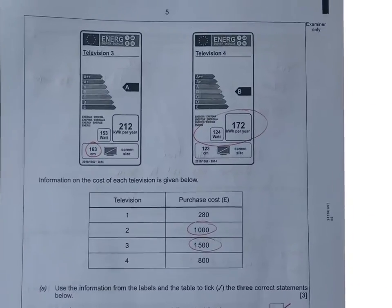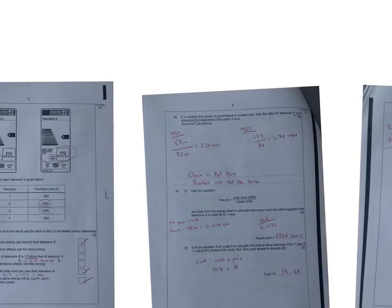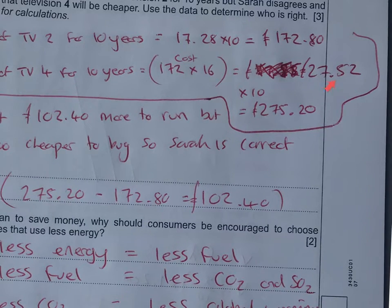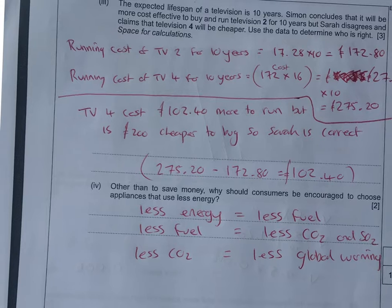I've got to do it for TV4 now though. The units are 172 units, times that by 16 pence, comes out to £27.52. Times it by 10 years to give you that overall cost. It's way more expensive. I've taken one from the other. TV4 costs £102.40 more to run, but it is £200 cheaper. So Simon is correct.